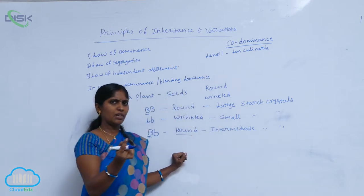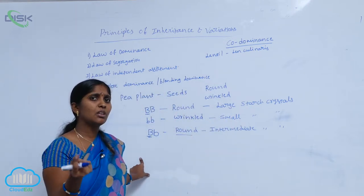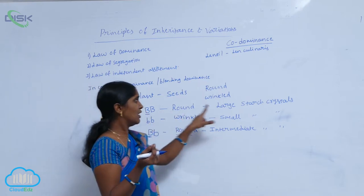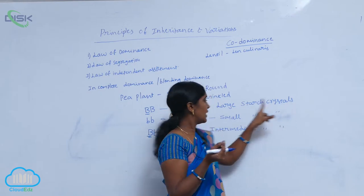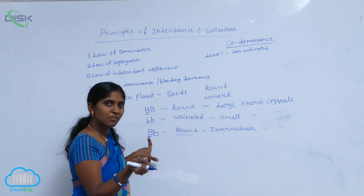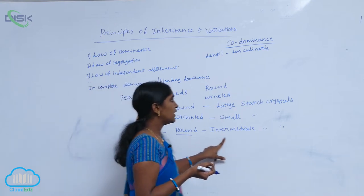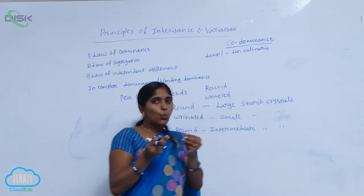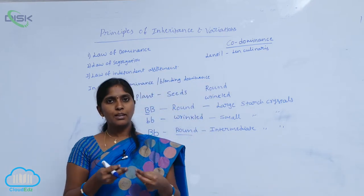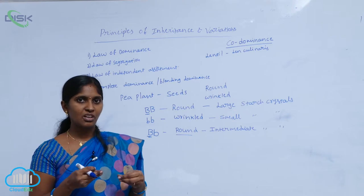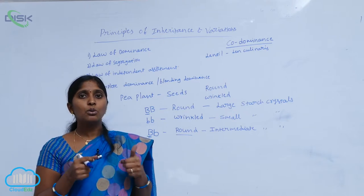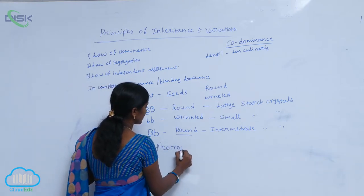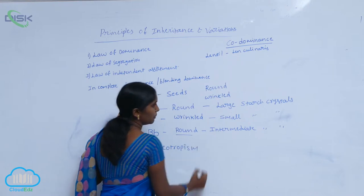One allele is representing two characters — one or more characters. The first capital B represents the large starch crystals. And when capital B is combined with the recessive allele, it shows an intermediate character. It means one or more characters can be represented by one allele or one gene. That phenomenon is called pleotropism.